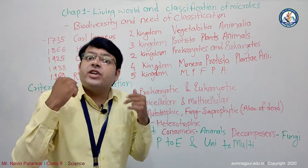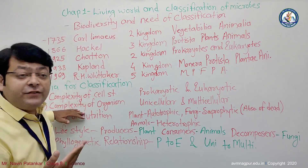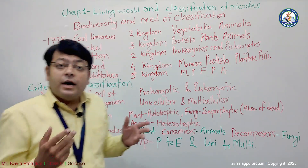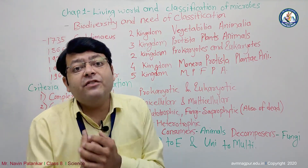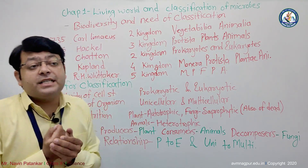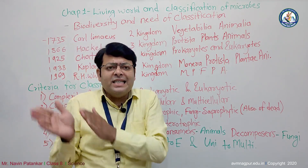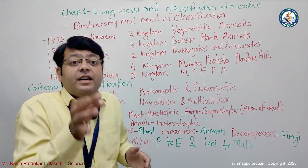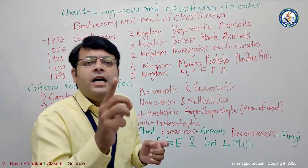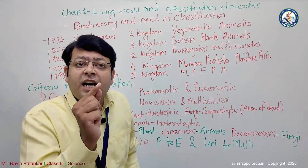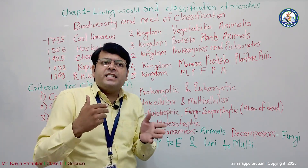The second criteria for the classification system is the complexity of the organism. He divides this into two columns: unicellular and multicellular. Unicellular means arising from a single cell — 'uni' means single. Multicellular means more than one cell is present — 'multi' means more than one.